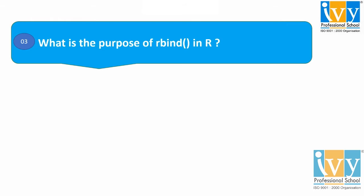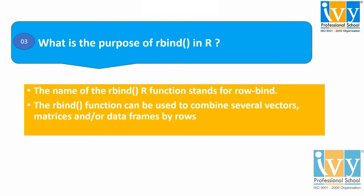Moving to the third question: What is the purpose of rbind in R? The rbind function in R stands for row bind. The row bind function can be used to combine several vectors, matrices, or data frames by row. The package needed to use the rbind function in R is the PLYR package.